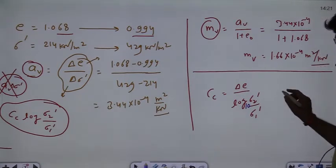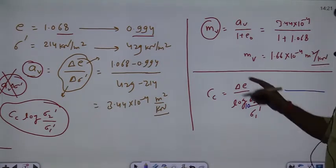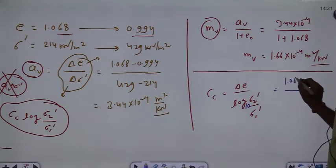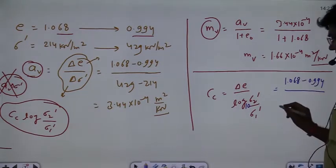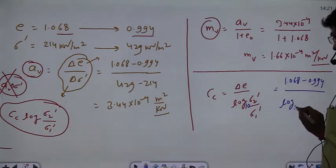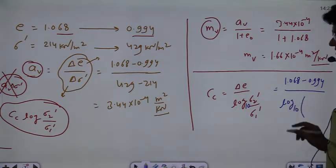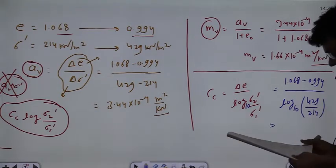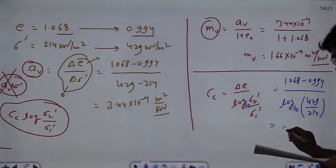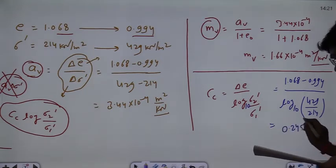Delta E is 1.068 minus 0.994 divided by log of, this is base 10, 429 divided by 214. So you can remove CC from here. If you remove CC, this is coming out to be 0.245.